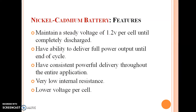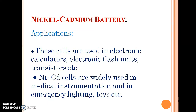The main features of the nickel-cadmium battery are: it maintains a steady voltage of 1.2 volts per cell until completely discharged, it has the ability to deliver full power output until the end of the cycle, consistent power delivery throughout the entire application, very low internal resistance, and lower voltage per cell. They are used in electronic calculators, electronic flash units, transistors, medical instrumentation, and emergency lighting.